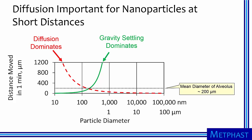Again, we can see that for particles smaller than 100 nanometers, diffusion dominates over gravity settling. These particles, if allowed to stay in the alveolar region for one minute, will likely be displaced a sufficient distance to hit the wall of the human alveolus.